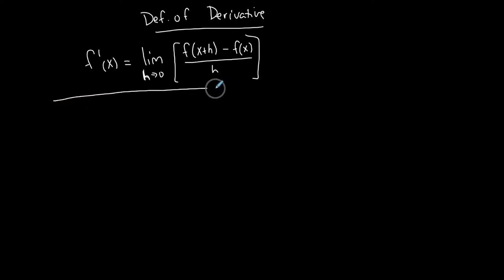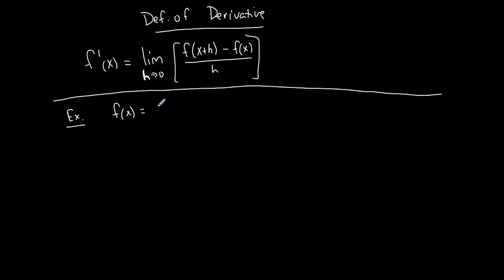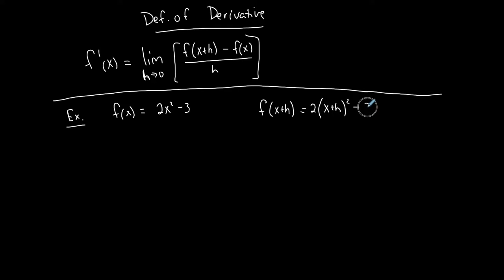I'll use this definition for two examples. The first function is f of x equals 2x squared minus 3. I'm going to start with the f of x plus h portion on the side. If you remember your function notation, that just means taking x plus h and plugging it in for x, so you have two times x plus h, squared, minus 3.